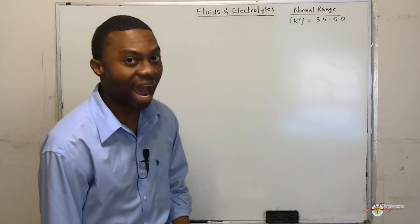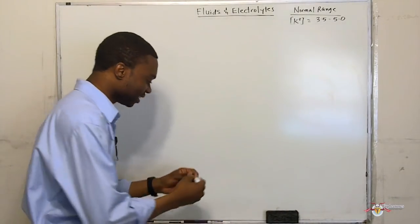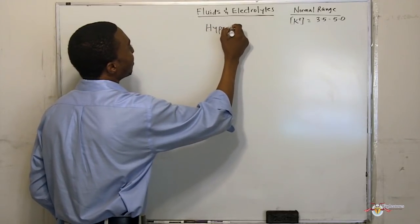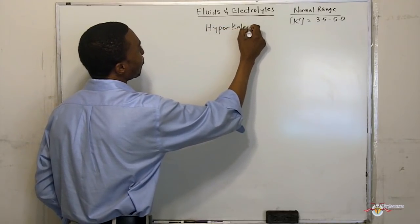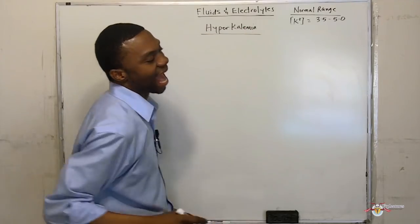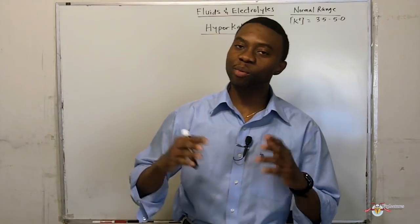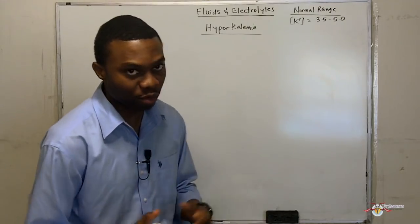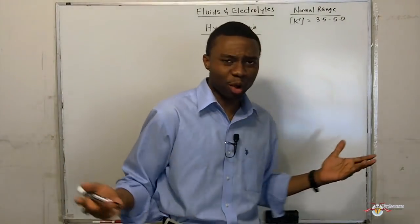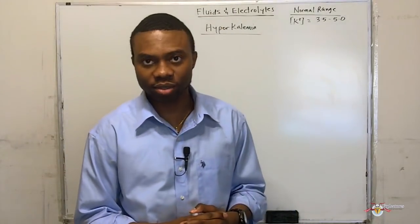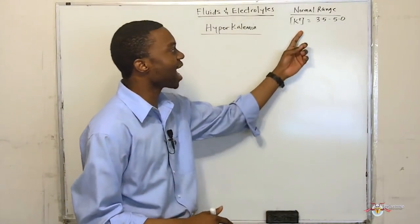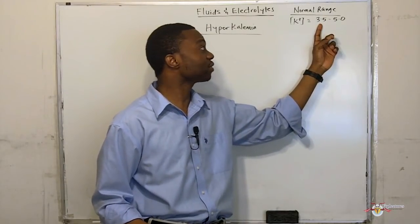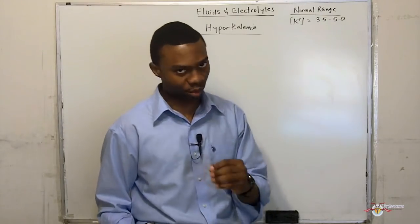Our next lecture is going to be on hyperkalemia. It is absolutely important that you understand this topic. Before we move on, what is normal potassium? What is the normal concentration of potassium? Well, potassium ranges from 3.5 to 5.0.